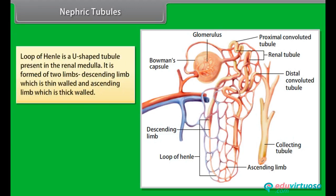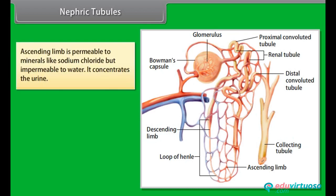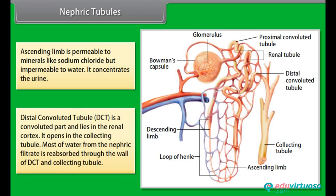The loop of Henle is a U-shaped tubule present in the renal medulla. It is formed of two limbs: the descending limb, which is thin-walled, and the ascending limb, which is thick-walled. The descending limb is permeable to water but impermeable to minerals like sodium chloride. The ascending limb is permeable to minerals like sodium chloride but impermeable to water — it concentrates the urine. The distal convoluted tubule (DCT) lies in the renal cortex and opens into the collecting tubule. Most water from the nephric filtrate is reabsorbed through the wall of the DCT and collecting tubule.